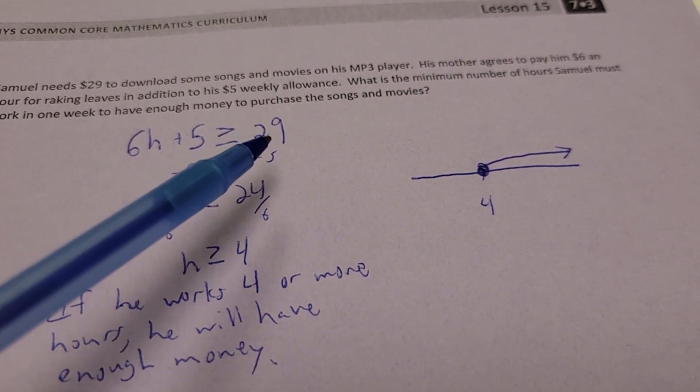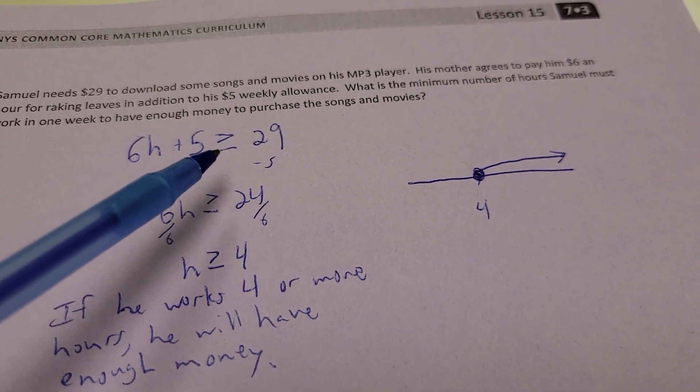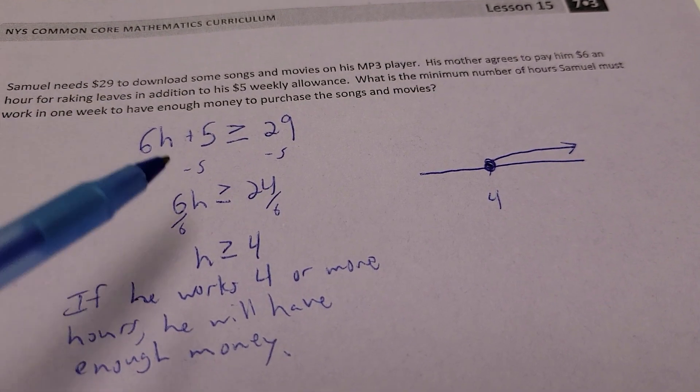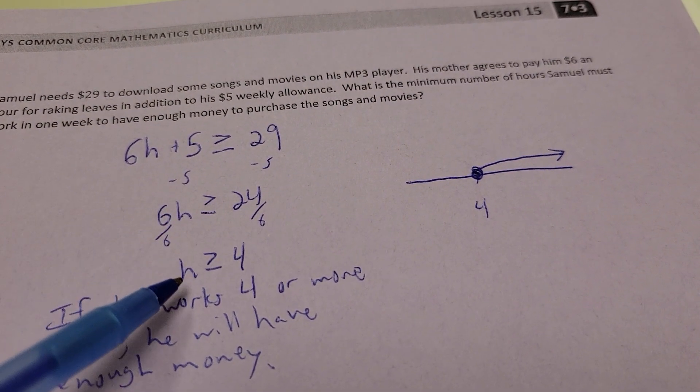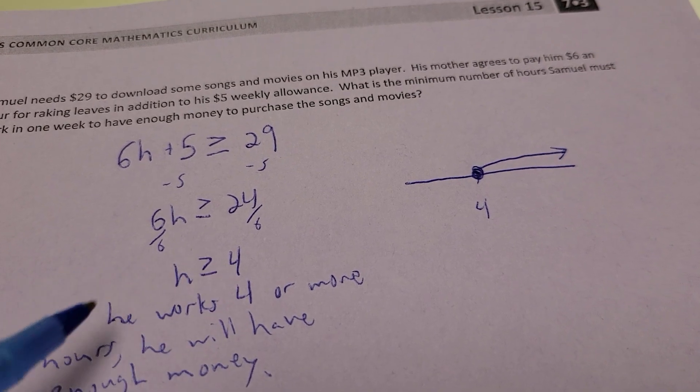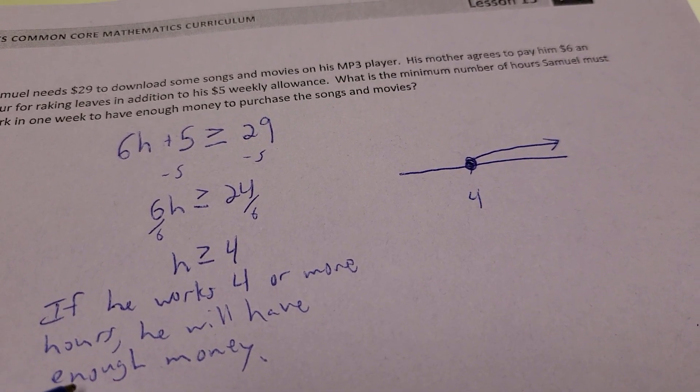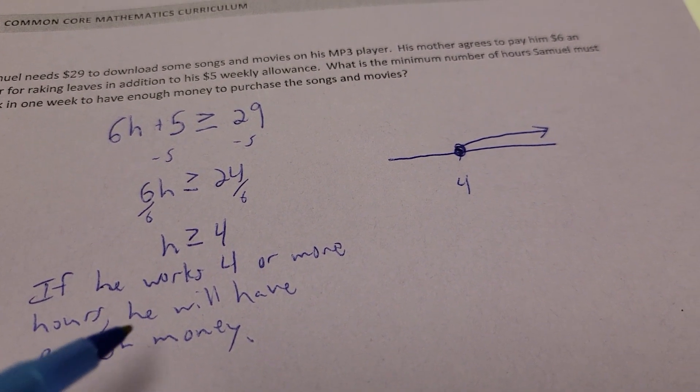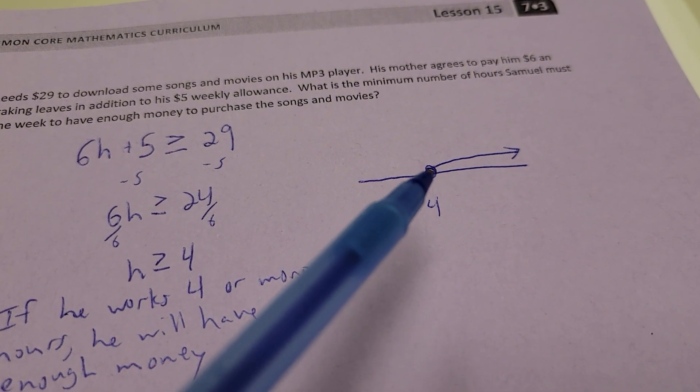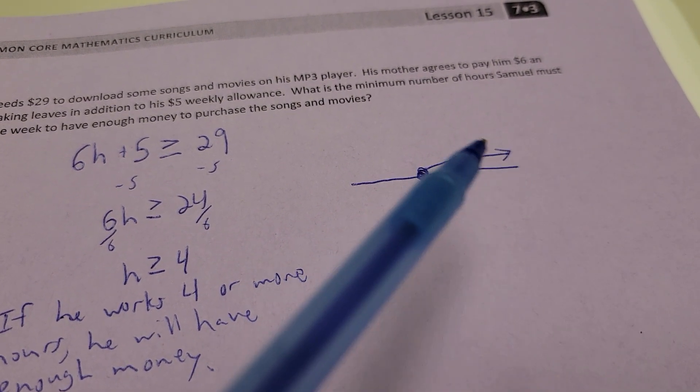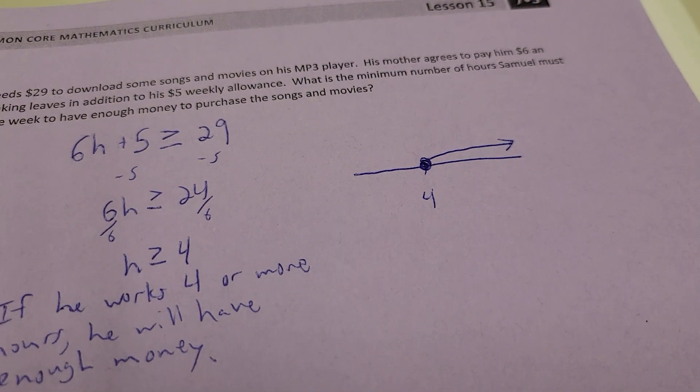Alright, $6 times however many hours he works, plus the $5 he's already got for his allowance. That can be greater than or equal to 29. Because if he makes more than 29, that's great. Or if he makes equal to 29, that's fine, too. To solve it like a normal equation, we get H is greater than or equal to 4. So, if he works 4 hours or more, he'll have enough money. So, if I want to graph that and darken my circle, anything more than that will work. So, I'm going to move to the right there.